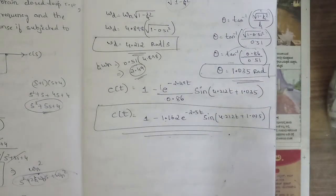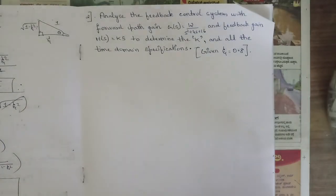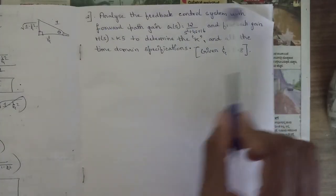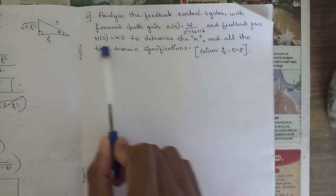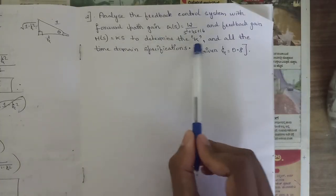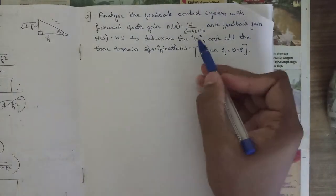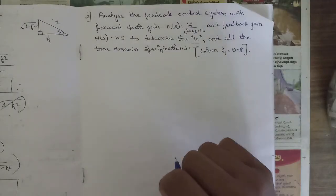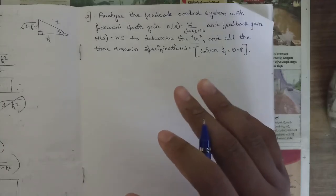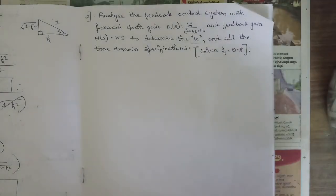Observe this problem carefully as it may appear in your exams. Now for the next problem: analyze the feedback control system with forward path gain G(s) = 12 / (s² + 4s + 16) and feedback gain H(s) = k·s. We need to determine the value of k and all the time domain specifications.